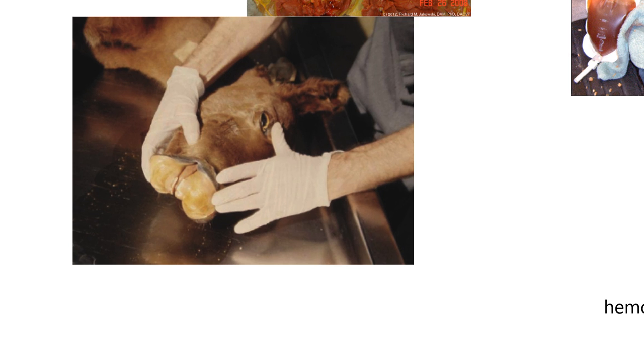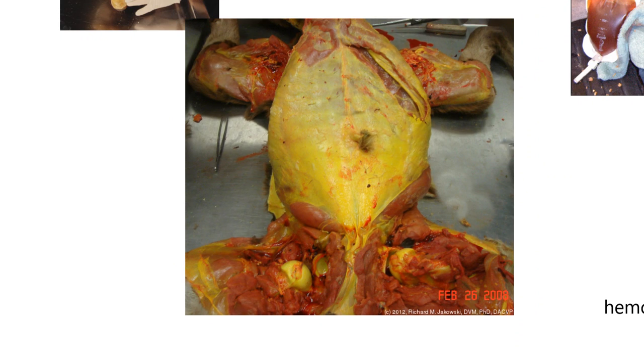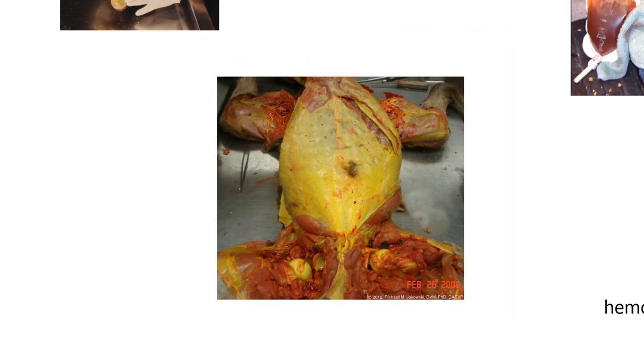Let's look at a few images of foals that have had isoerythrolysis. I've got two pictures unfortunately of foals that have died. They're trying to show the jaundice, because if enough red blood cells break down, there's bilirubin that accumulates in the body faster than it can be eliminated, giving you jaundice or icterus — we talked about that before. If you look at these membranes, they're yellowish, icteric. Then the fat gets kind of yellowish because there's so much bilirubin. This is shown at necropsy.